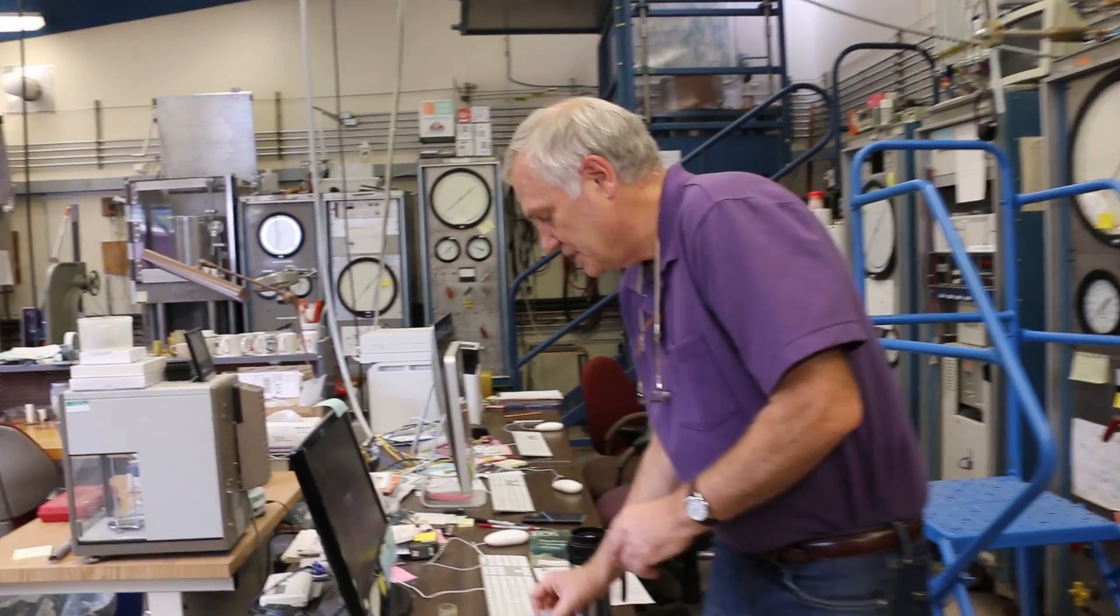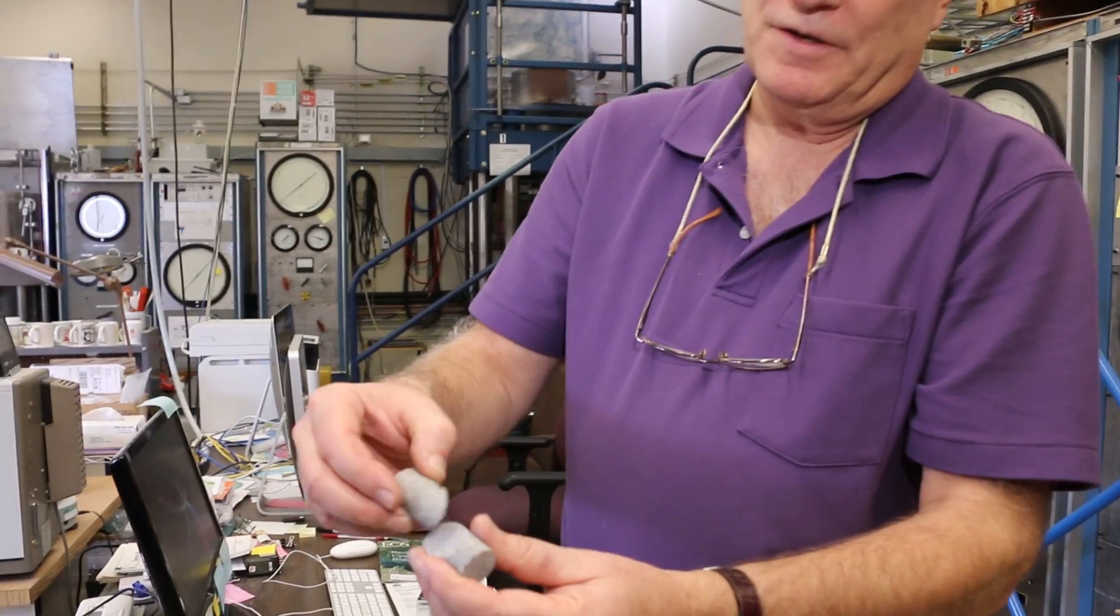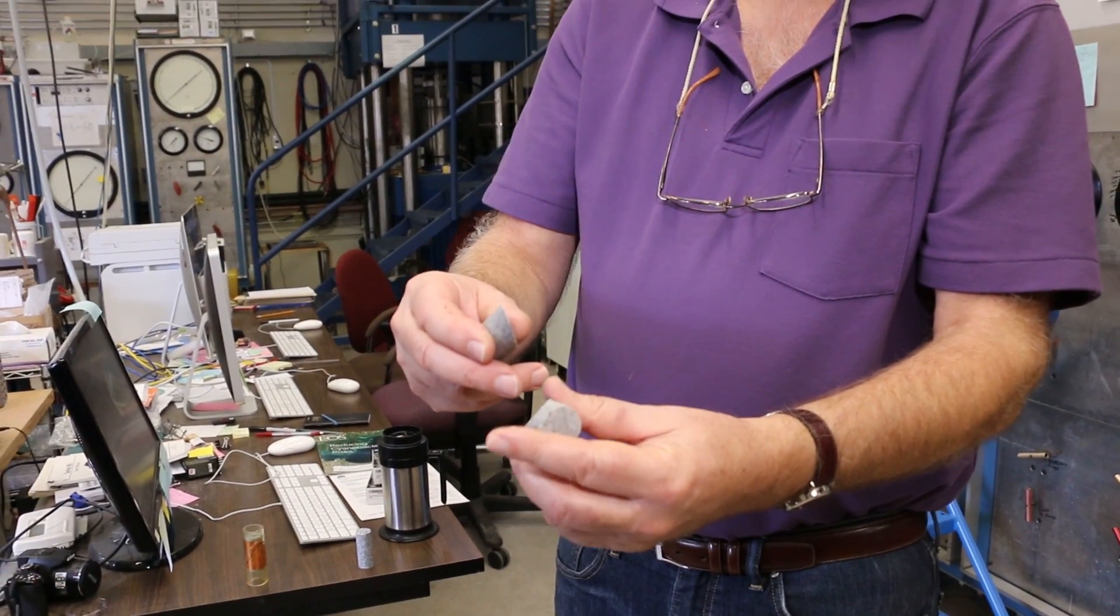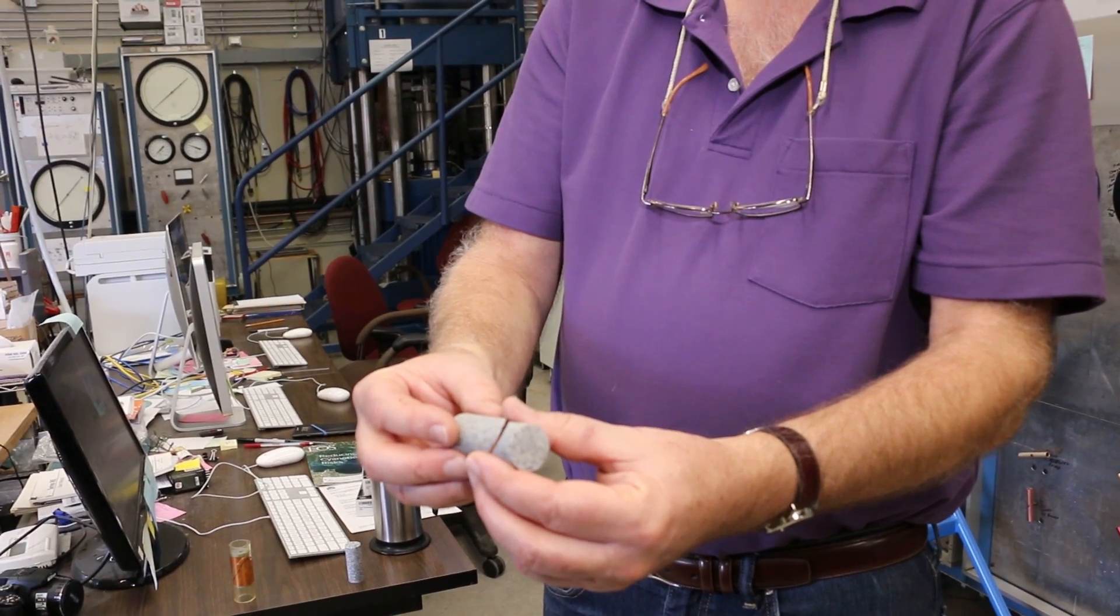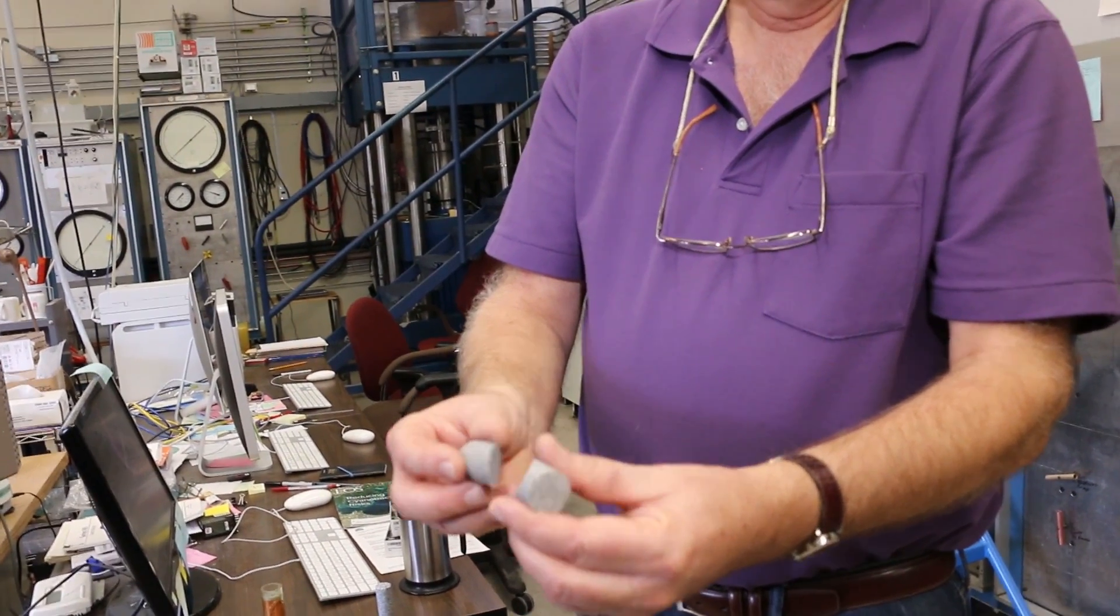Or if we wanted to study a fault, this would be our version of a fault. We would put a sample together like this with a bit of material either from a fault zone or from the surface of the earth that we wanted to understand what the properties of that material was.